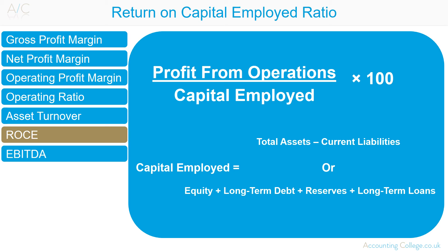Operating profit before interest represents the profit available to pay interest to debt investors and dividends to shareholders. This should therefore be compared with long-term debt and equity invested in the business. Profit after interest and tax represents profit available to pay dividends to shareholders, and should be used to calculate return on ordinary shareholder funds. Investors use return on capital employed to compare alternative investments of similar risk. Generally, the higher the return on capital employed figure, the better it is for investors.